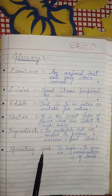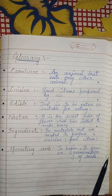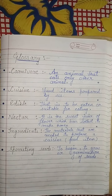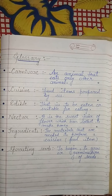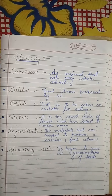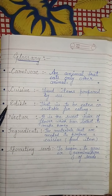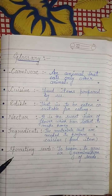And last, our term is sprouting seeds — this means to begin to grow, or the germination of seeds. So, our terms are: carnivore, cuisine, edible, nectar, ingredients, and sprouting seeds.